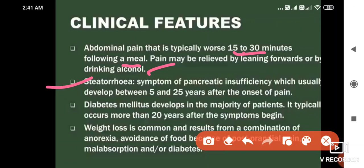Steatorrhea — meaning oily stool — develops due to pancreatic insufficiency, usually between 5–25 years after onset of pain. Diabetes mellitus also develops in the majority of patients.